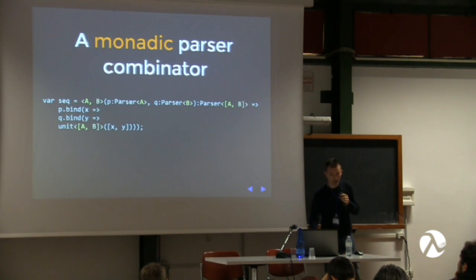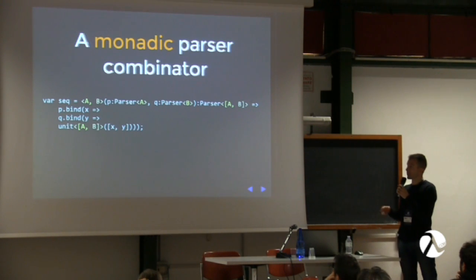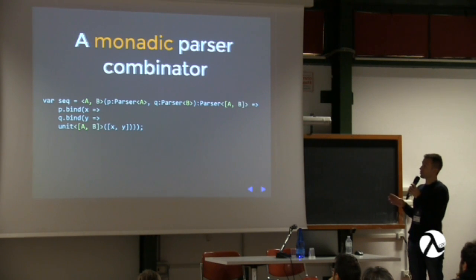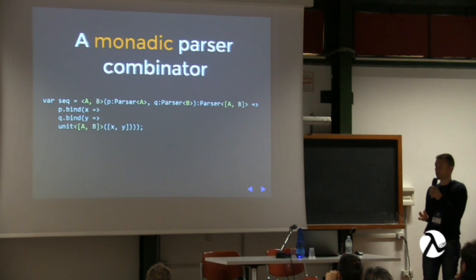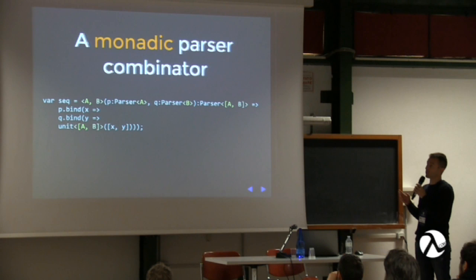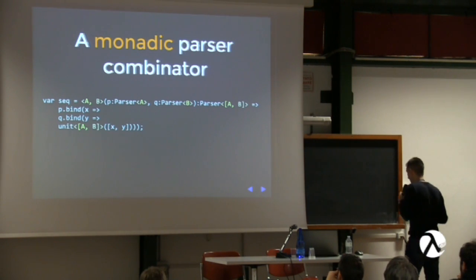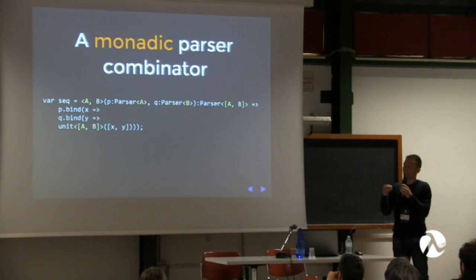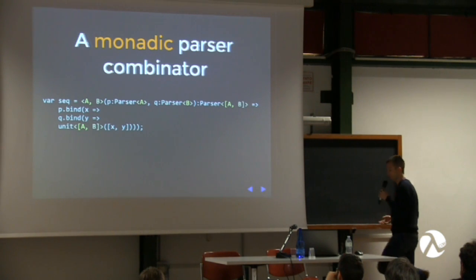Using this new parser implementation, we can redefine the seq combinator using a monadic approach, which is much more straightforward than before — it's just binding P to Q bind unit. We get the result of parsing the input string with P, apply the remainder to Q, and combine both results. So we're sequencing the two parsers.